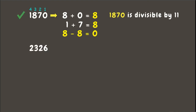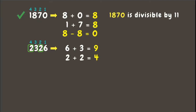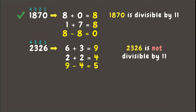Second example: we have 2326. Again, let's label the digits first. The odd position digits are 3 and 6; if we add them the answer is 9. Next, let's get the sum of the even position digits: 2 plus 2, which equals 4. Finally, let's subtract the sums: 9 minus 4, which is 5. Since 5 is neither zero nor a multiple of 11, we can say that 2326 is not divisible by 11.